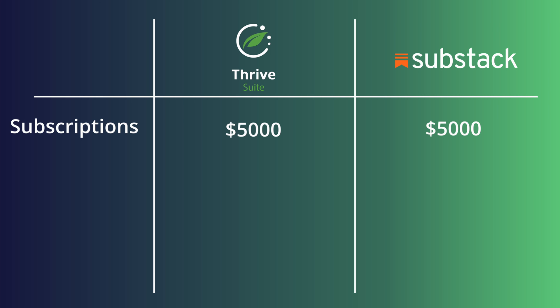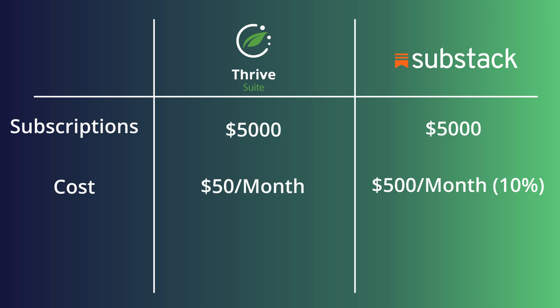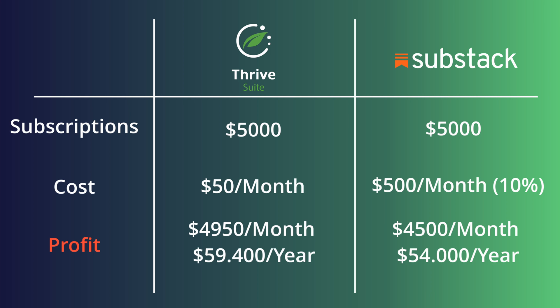Let me break down the numbers. Sure, at the beginning you'll have some fixed recurring costs with building your own platform that you won't have with Substack. But in the long run, paying $50 a month is absolutely worth it. Say you're generating $5,000 a month in subscriptions — your cost on Substack would be $500 a month because they take 10% of your revenue. Compare that to the $50 a month to run your own platform — your monthly profit on Substack would be $4,500 compared to almost taking it all home if you're running your own platform. There's also a psychological factor of being invested in your platform that helps you develop the discipline to continue creating content.